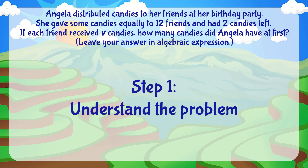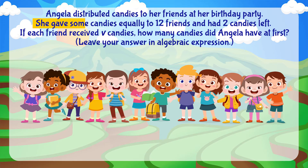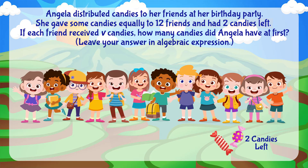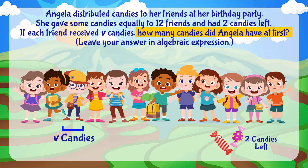Let's break down the question and understand it. Angela gave some candies equally to 12 friends and had 2 candies left. This means that after Angela gave 12 friends the same number of candies each, she had 2 candies remaining. From the question, we also know that each friend received V candies as represented by the algebraic expression. The question asks us to find out how many candies Angela had before she gave away the candies.